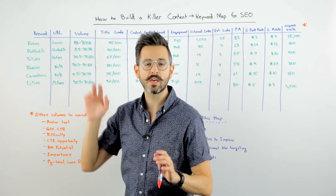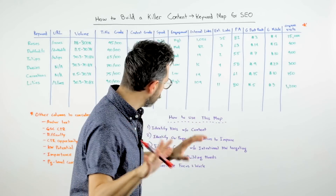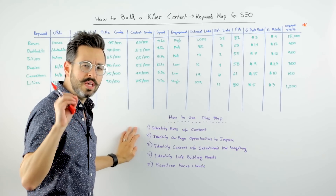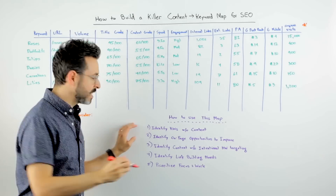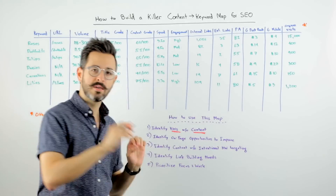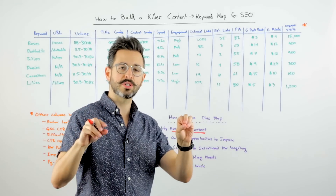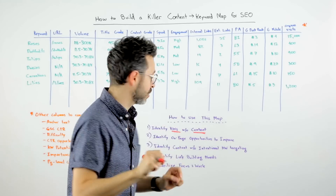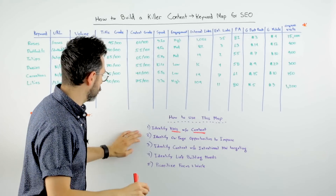So now you've got this big content-to-keyword map. Why are you building this? Well, this map lets you do a bunch of incredibly important things, like identify keywords that have no content mapped to them. Essentially, that's saying you need to build some content if you want to target this keyword — that's work you need to do.